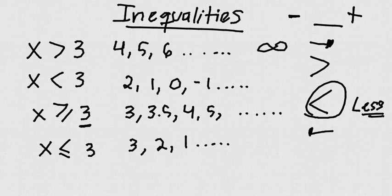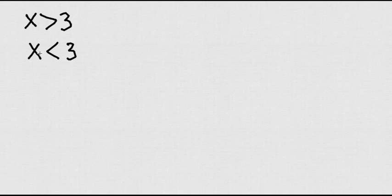Let's go ahead and learn how to graph these inequalities. When you want to graph inequalities on the number line, these are the rules. When we have greater than — for example, greater than 3 — or when we have x less than 3, here I'm not including the number. So when we graph them, we're going to use a bubble or an open circle. Also, we're going to be using parentheses when we do the interval notation.